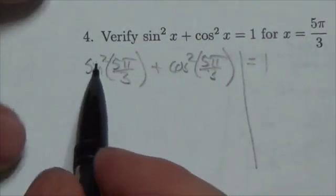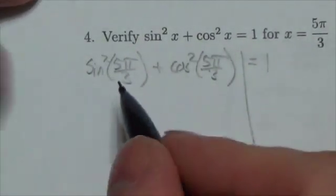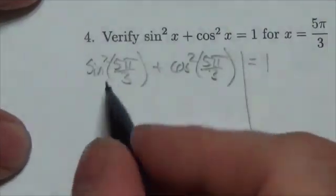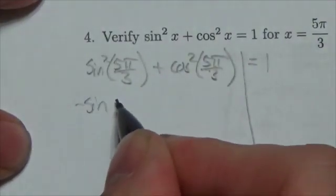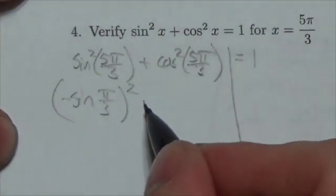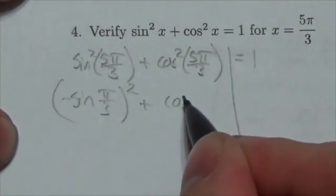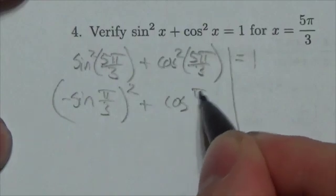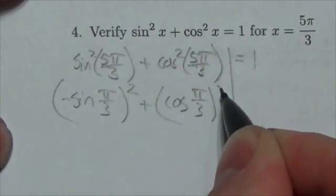So, sine is going to be negative in the fourth quadrant, and the reference angle is π over 3, and that's all squared. Cosine is going to be positive in the fourth quadrant, and so it'll be the cosine of π over 3, and that will be all squared.